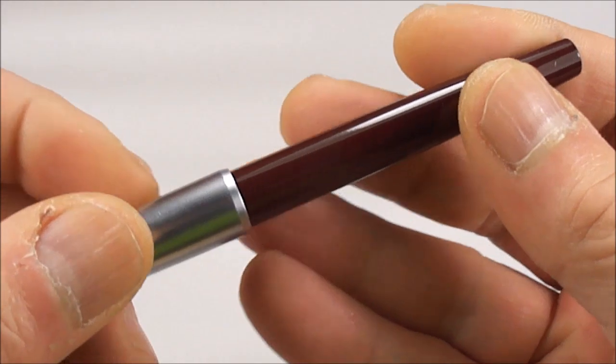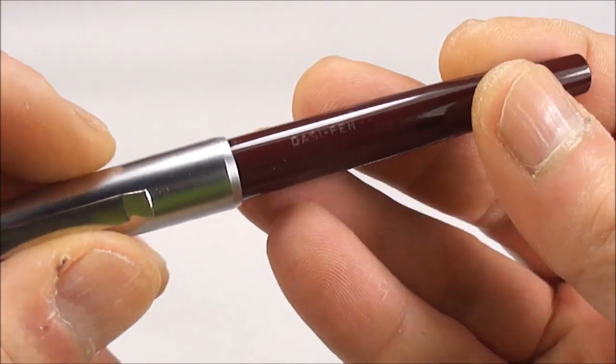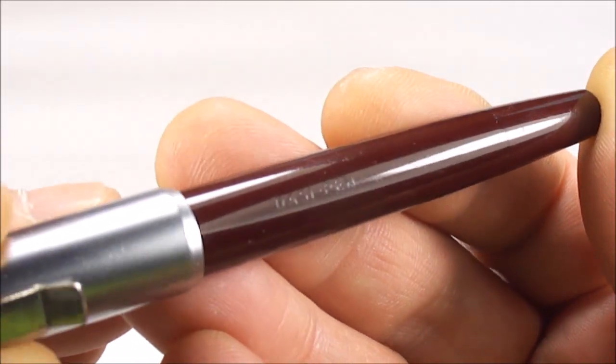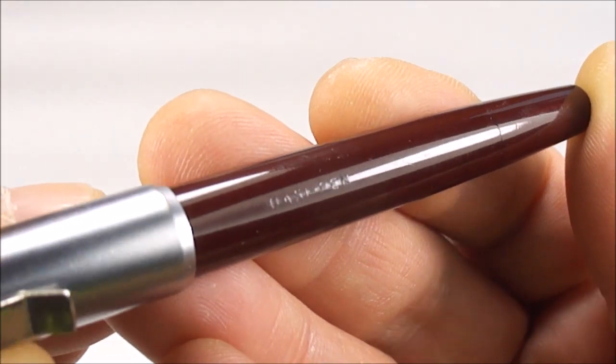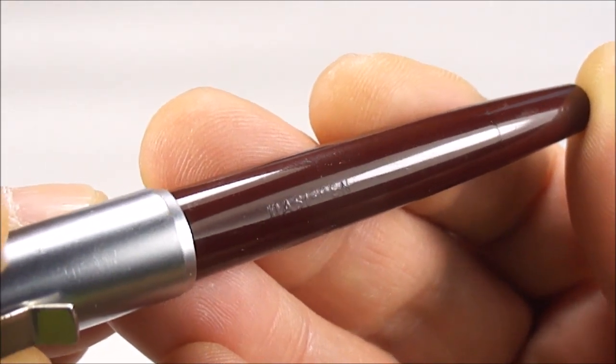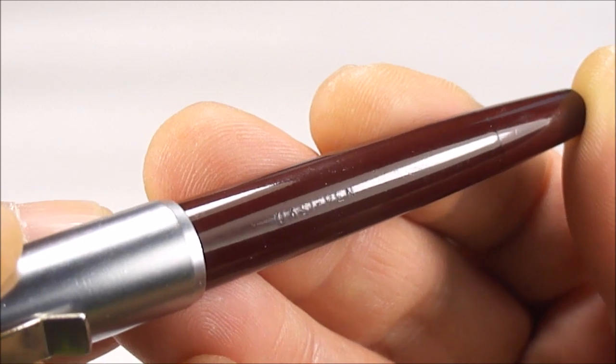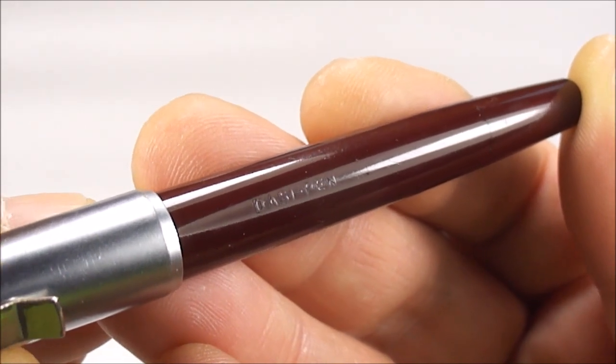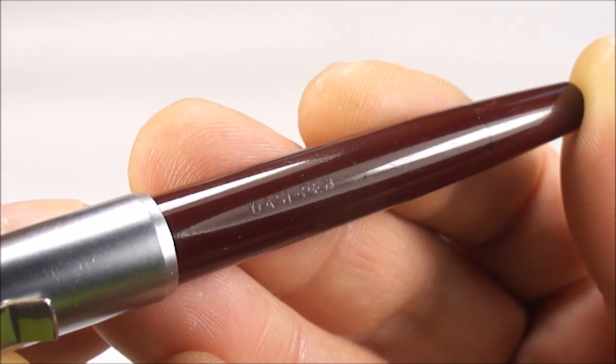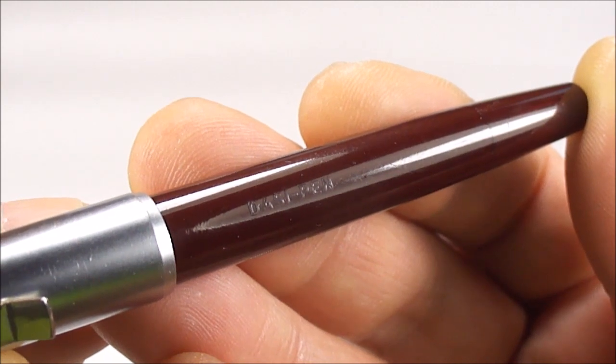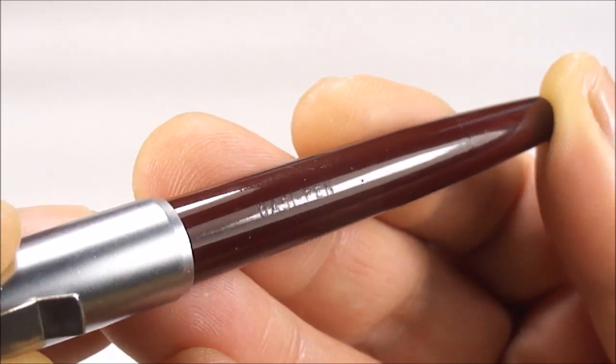If I show you the barrel imprint there, I'll just give it a little bit of a twirl so you can actually see. As you can see, it just simply says Dazzy, Dazzy pen. There's no marking that says made in Australia, but you can rest assured this particular pen is actually made in Australia. So that's the Dazzy pen.